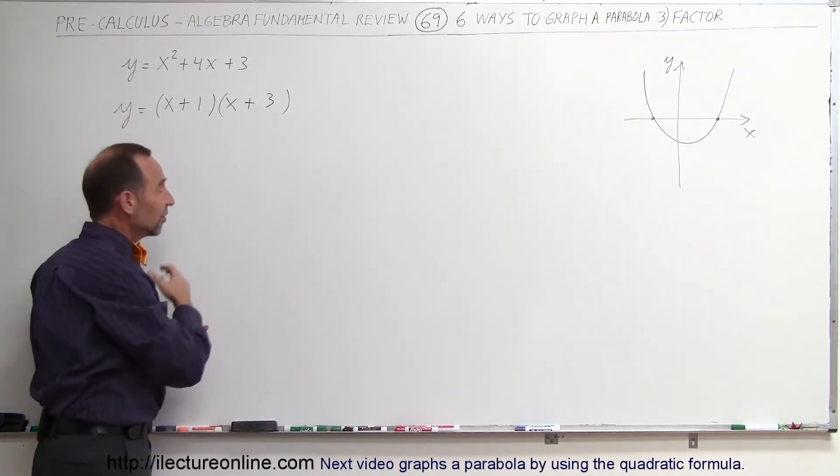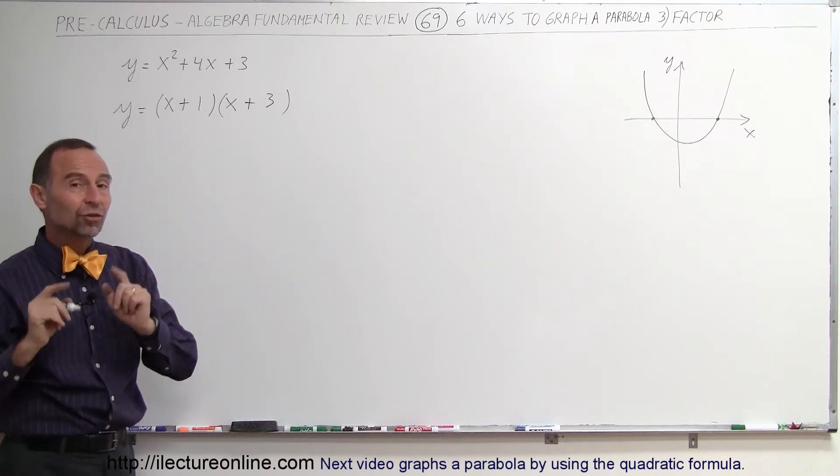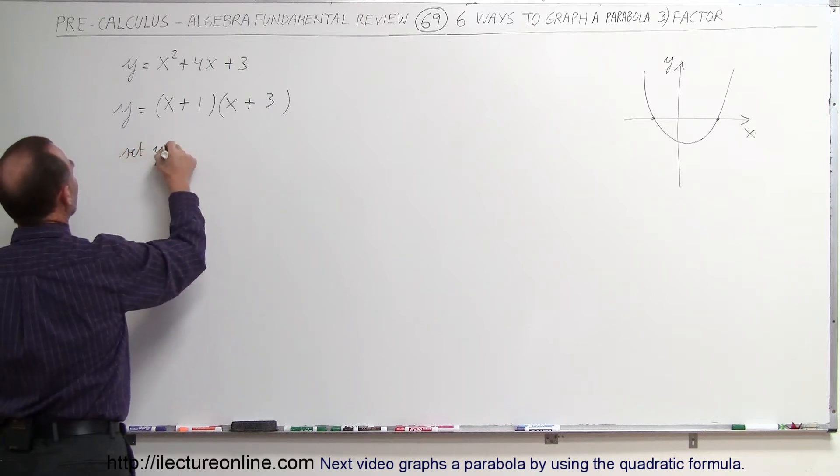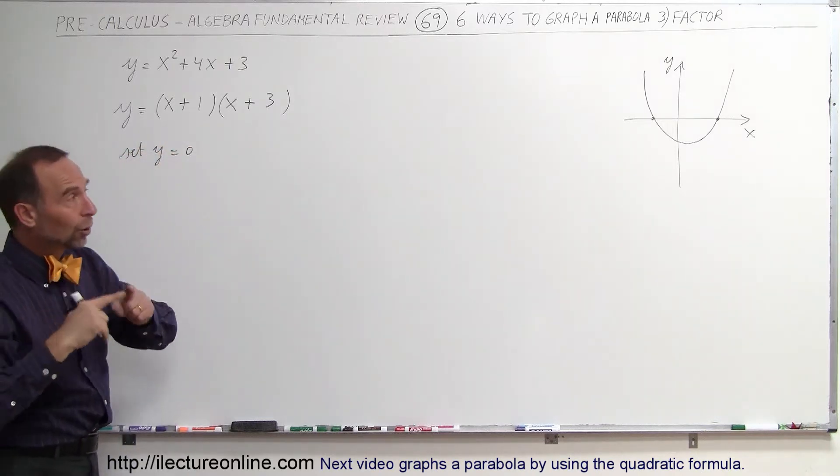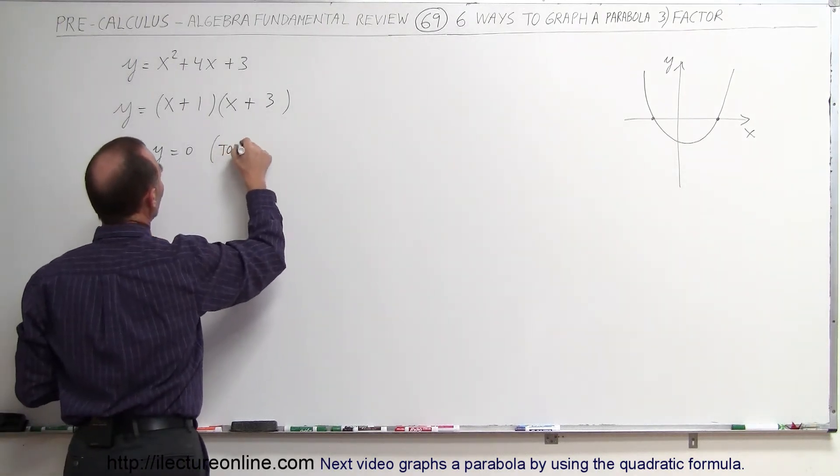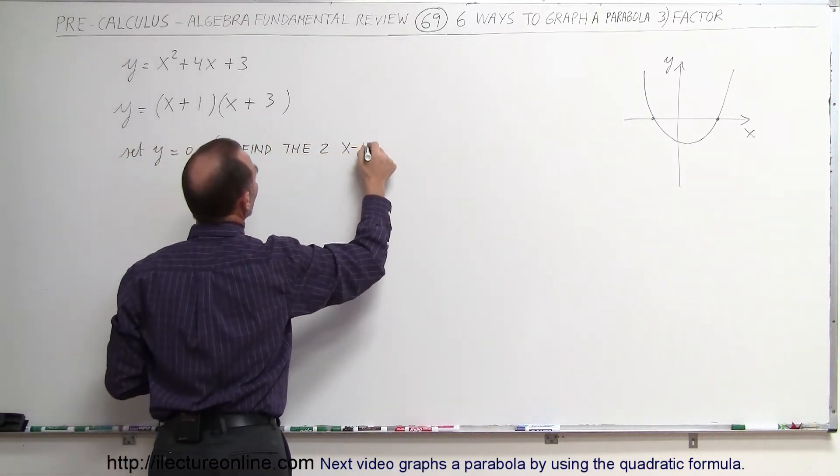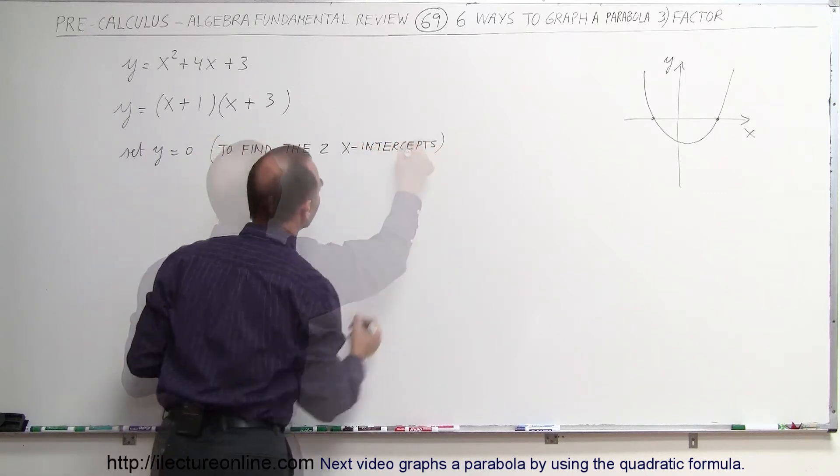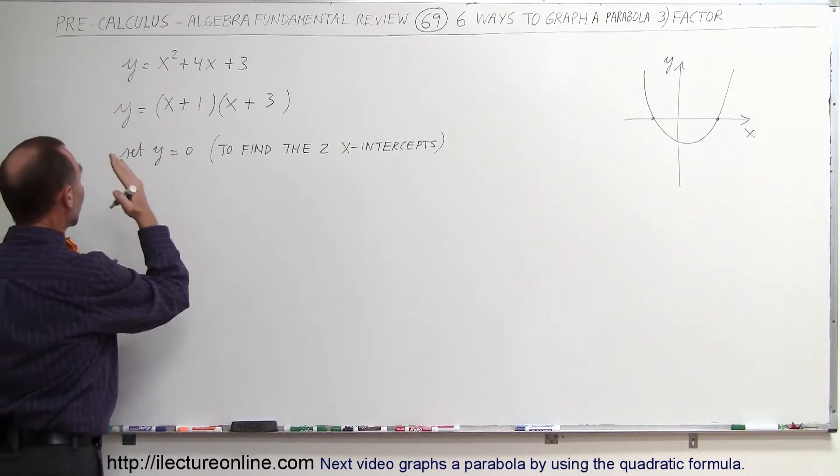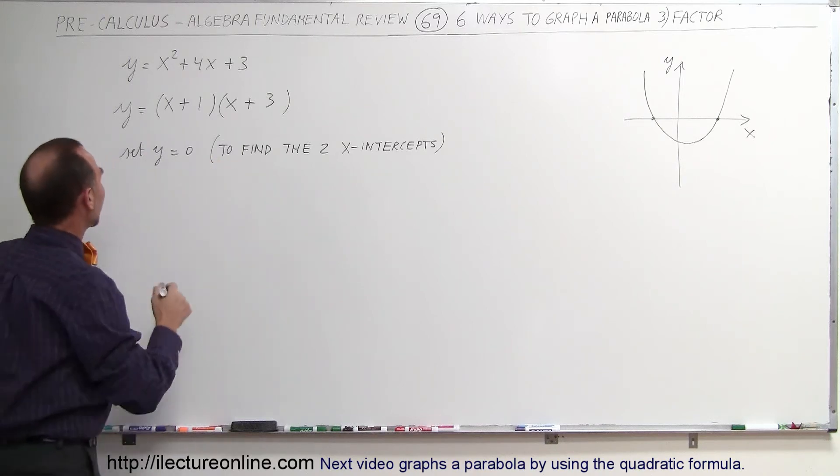So if we set y equal to zero and solve for that equation, we might find the places where it crosses the x-axis if there's indeed two real solutions. So let's see if that's the case. So we're going to set y equal to zero to find the places where it crosses the x-axis, to find the two x-intercepts where it crosses the x-axis. Sometimes we see things done and we don't know why. So what we do here is we say we're going to set y equal to zero. We're setting it equal to zero for this particular purpose to find the two x-intercepts.